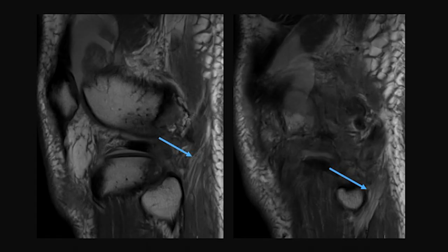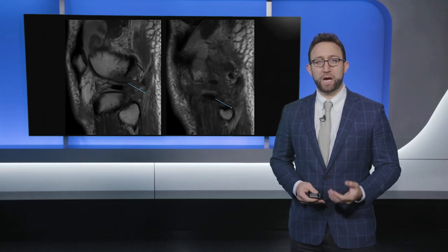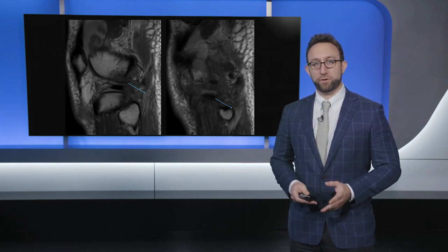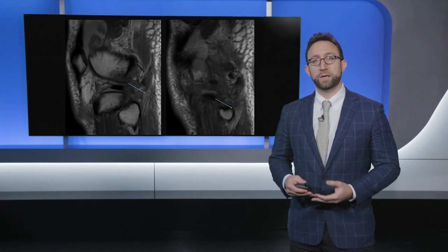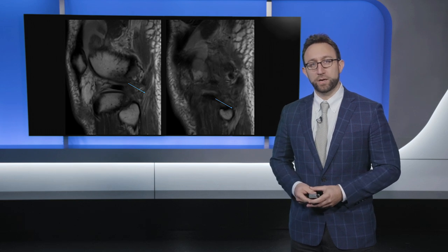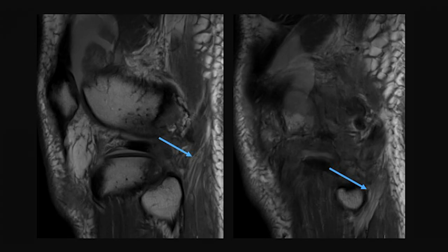This is an MRI cut I routinely get — a T1-weighted sagittal image — and what I really want to point out is where the peroneal nerve is tracking. I find this very important for preoperative planning, especially for surgeons who don't perform a lot of these surgeries. If you can find the peroneal nerve on MRI preoperatively, you can more readily find it — perhaps encased in scar — during the actual surgical procedure. On the picture on the left, the arrow demonstrates the striations of the peroneal nerve, and on the right you can see it in its anatomic location around the fibular neck.